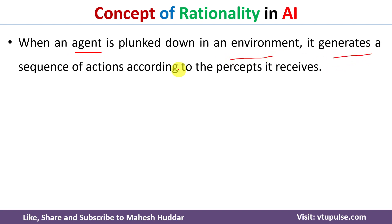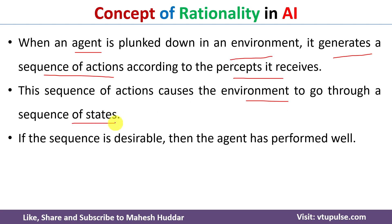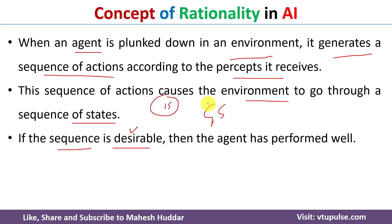When you put the agent into the environment, it generates a sequence of actions according to the percepts it receives through the sensors. When it performs those actions with the help of actuators, the environment goes through a sequence of states. The first state may be the initial state and the last state may be the goal state. If this sequence of states is desirable — meaning it has started from the initial state and reached the goal state — then it is desirable. If it does not reach the goal state, then it is not desirable.